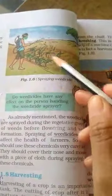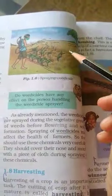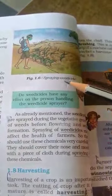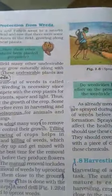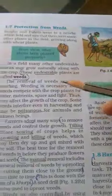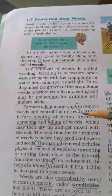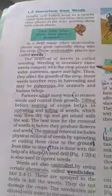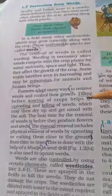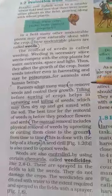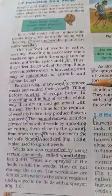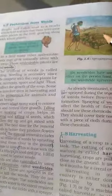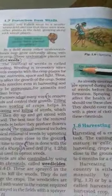Farmers adopt many ways to remove weeds. They are spraying weedicide — they are spraying a chemical weedicide. Farmers adopt many ways to remove weeds and control their growth: tilling before sowing, uprooting and killing weeds so they get mixed with the soil.